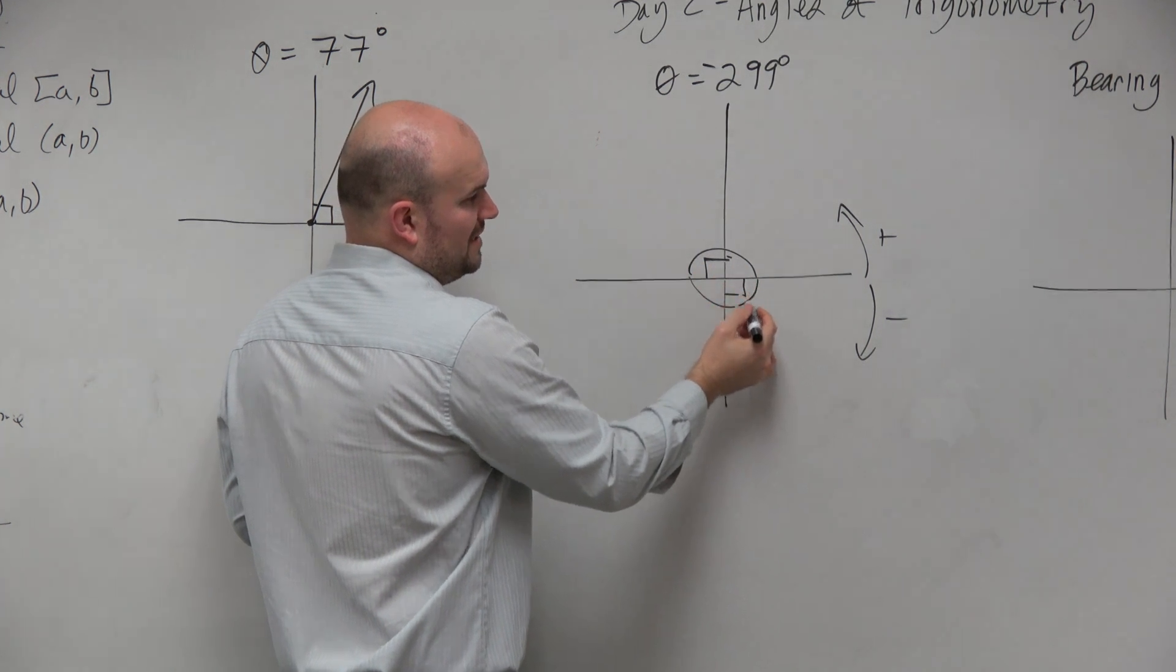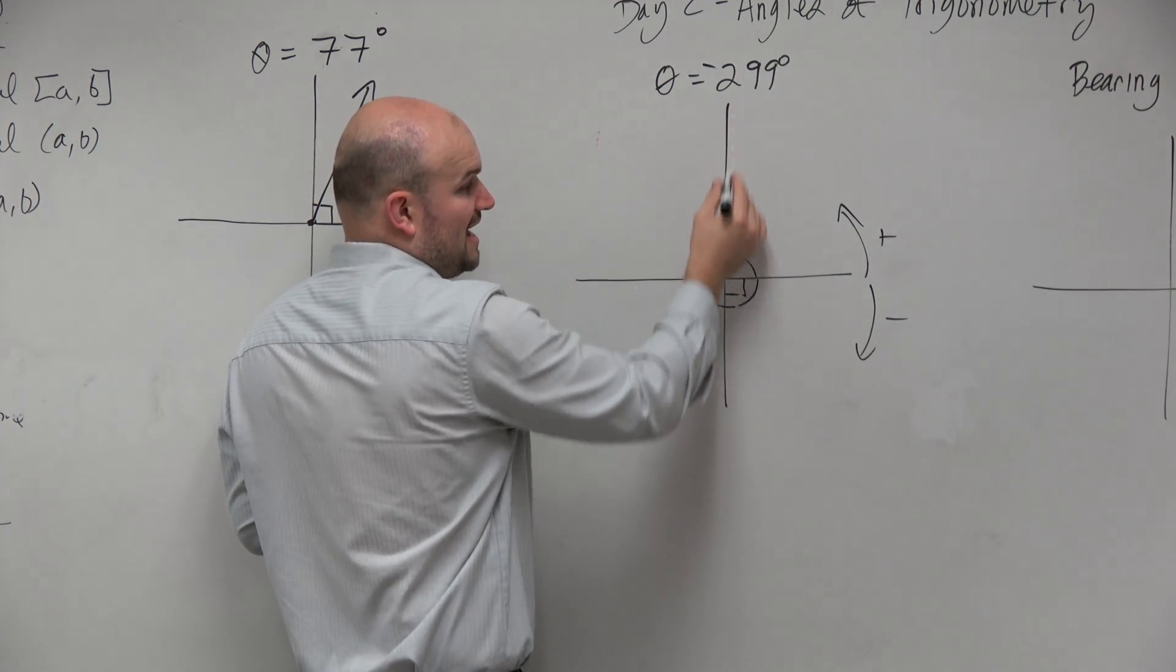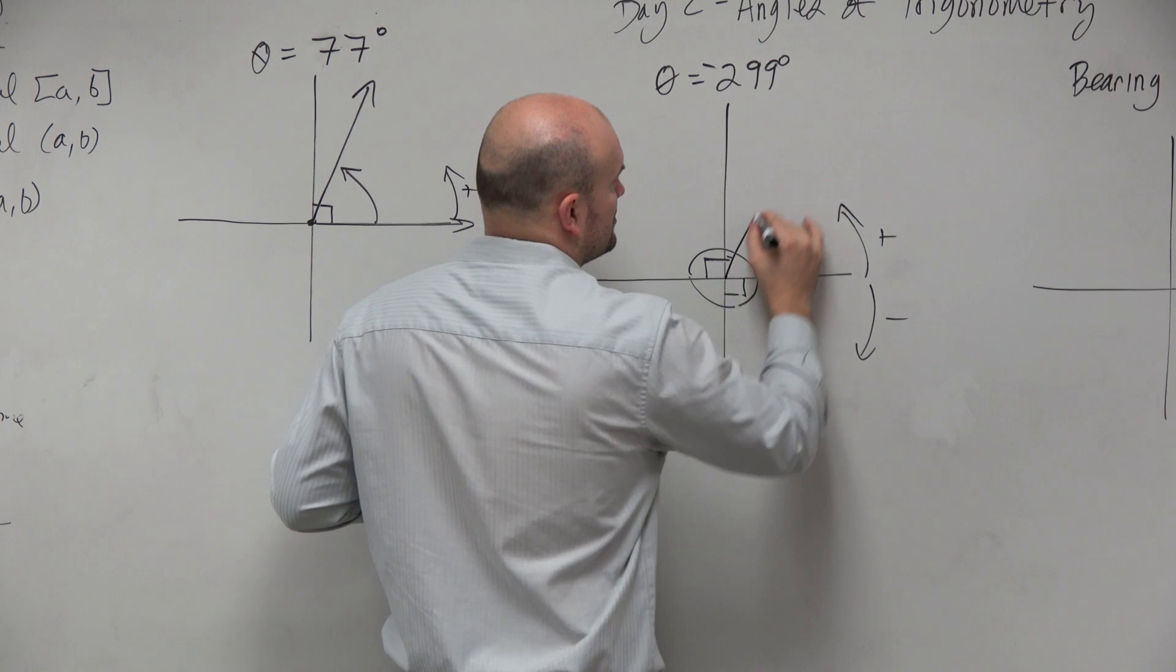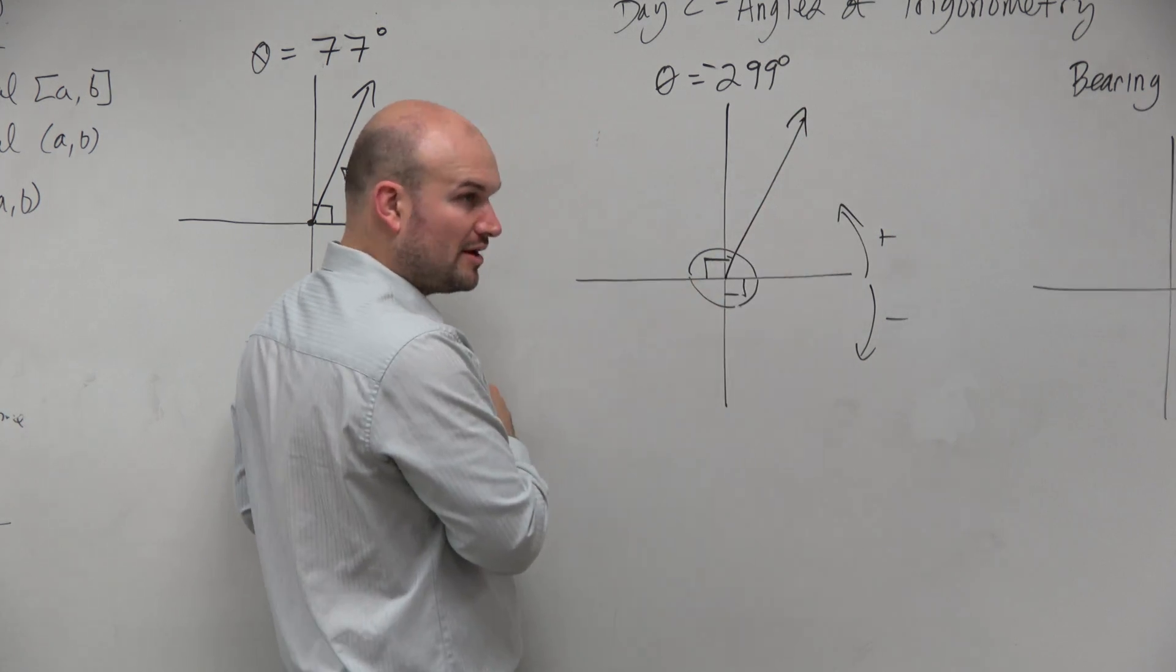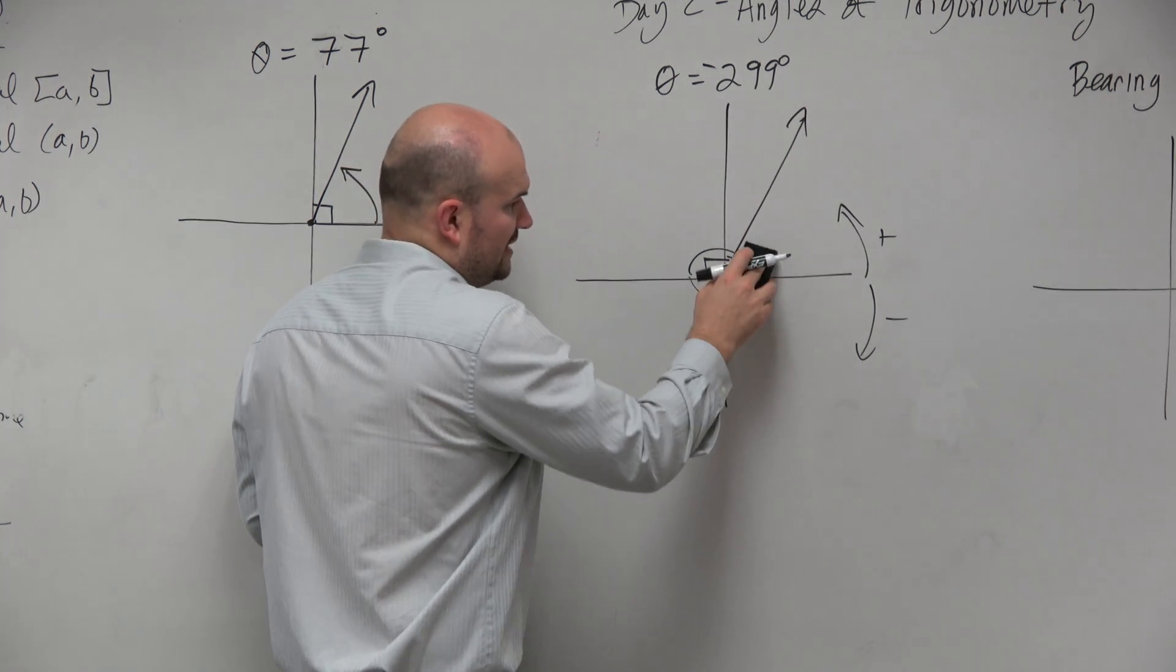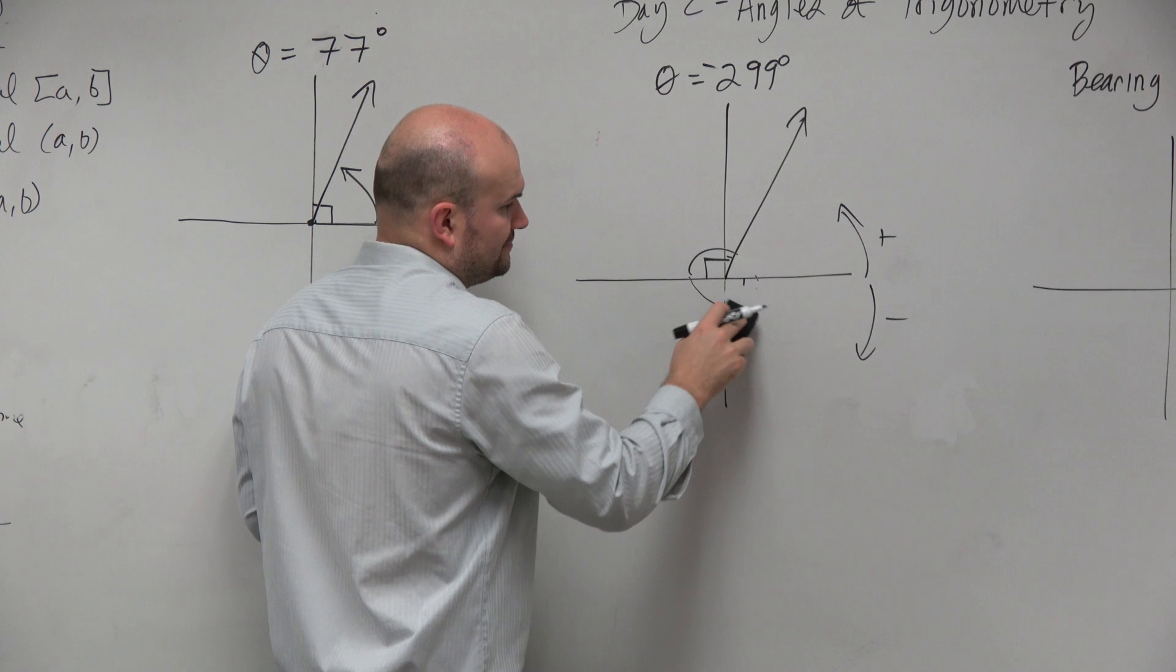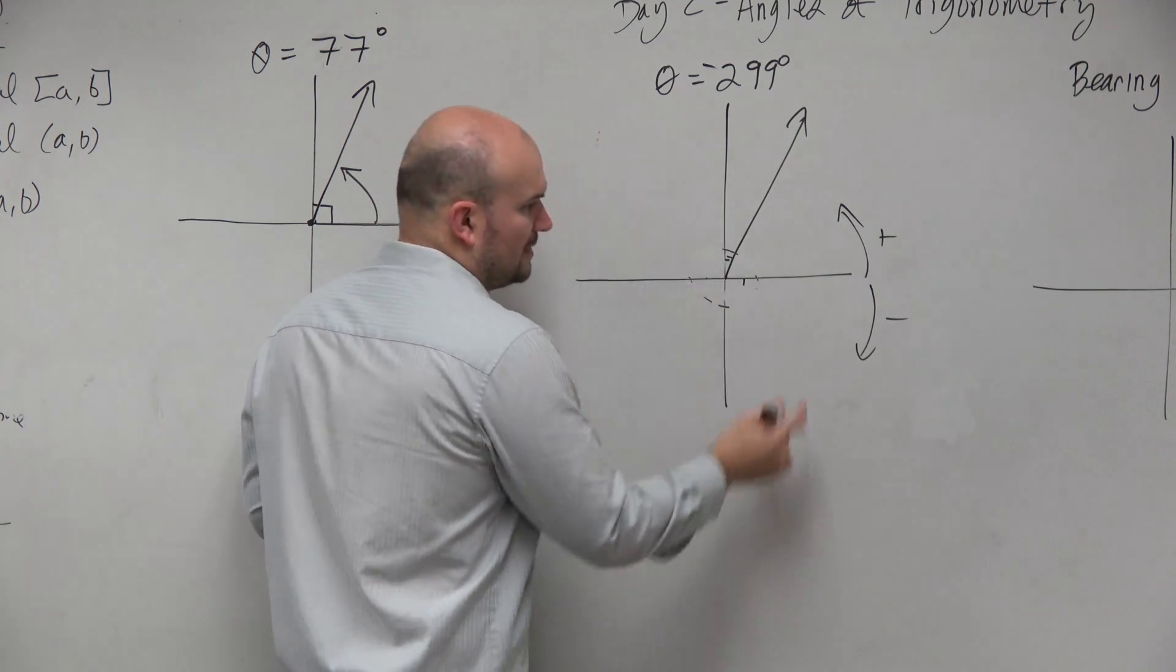So if we're saying from here to here is 270, I'm just adding an extra 30 degrees. So I'm just going to estimate it's going to be something right around in there. I don't really need all of this stuff that I created. OK?